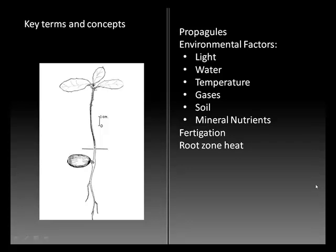Key terms and concepts for this week include the term propagules. We'll be going through environmental factors that determine or promote the effective growth of new plants, and they are primarily light, water, temperature, gases, soil, and mineral nutrients. We'll mention fertigation and root zone heating among other concepts in this week's assignment.